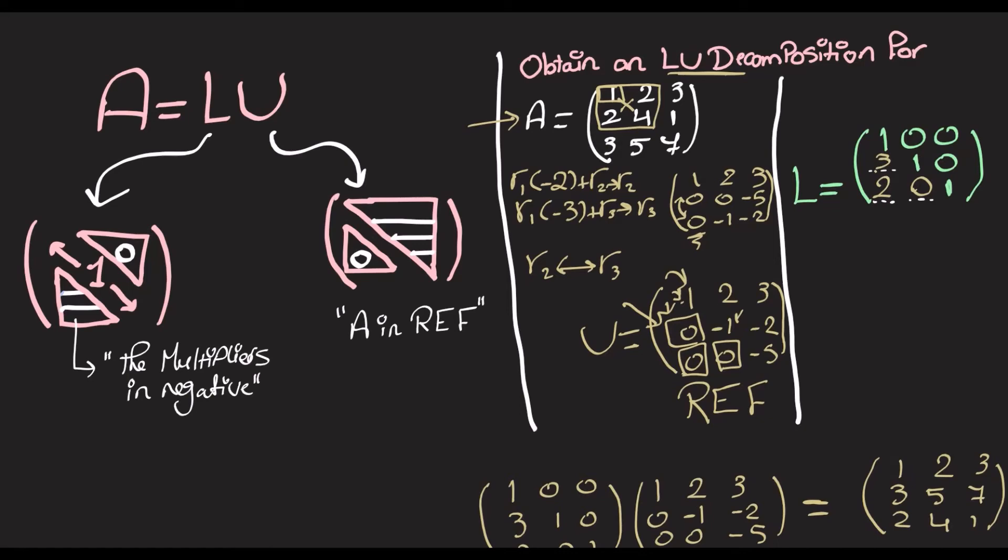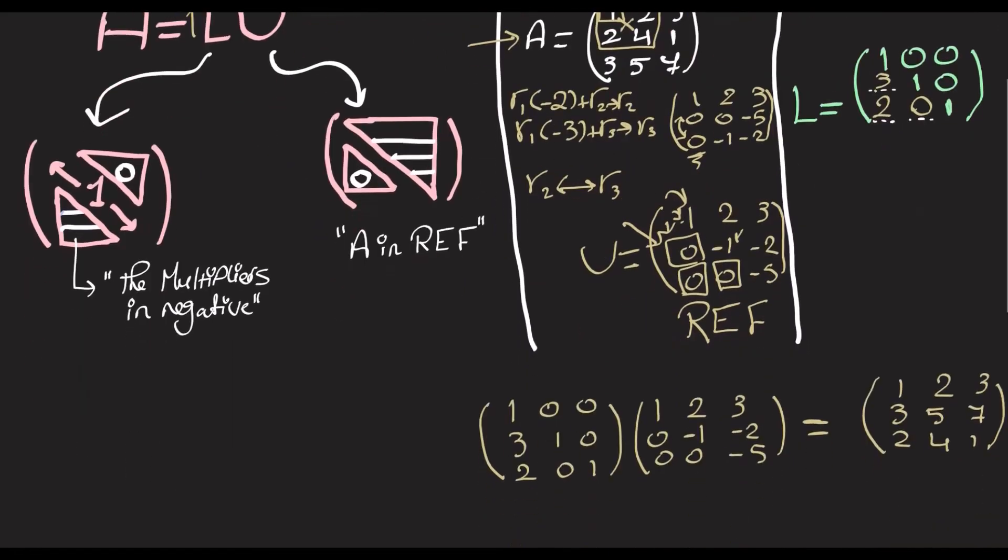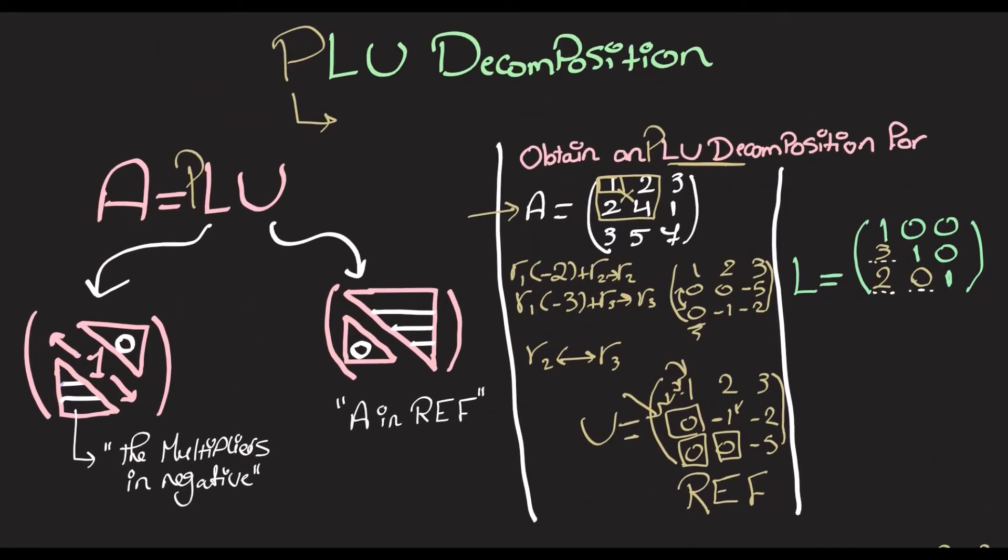But what we can do is decompose A into PLU. So, I'm going to introduce P here, P here, and P here. So, P is a permutation matrix and a permutation matrix is just an identity matrix with rows interchanged or columns interchanged.